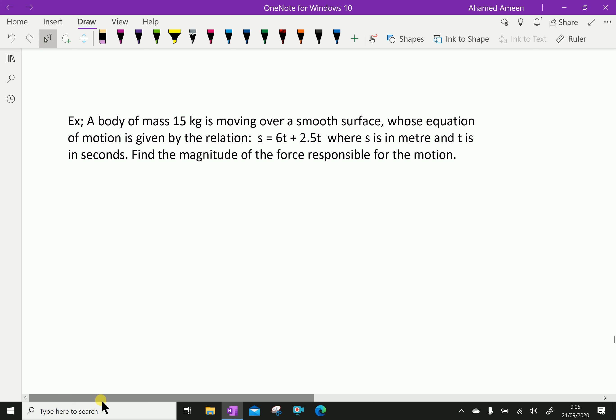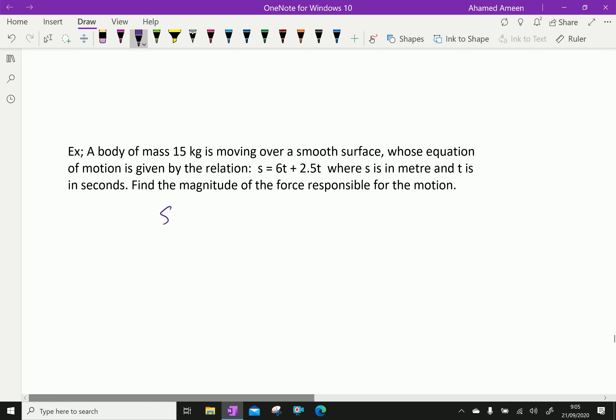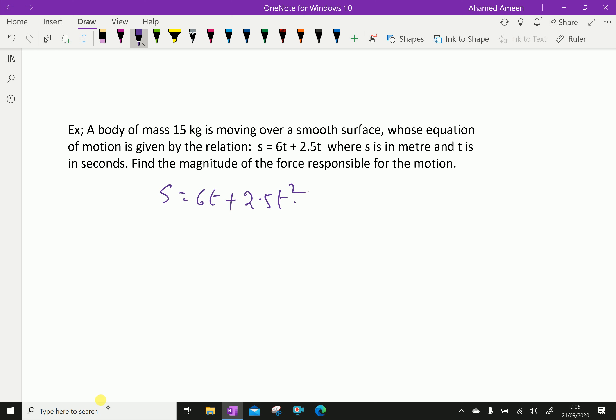The equation of motion is S equals 6t plus 2.5t squared. Differentiating S with respect to t: dS by dt equals 6 plus 5t.